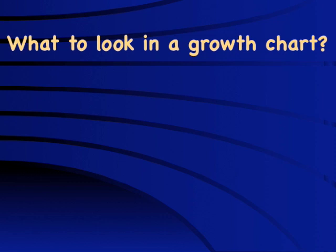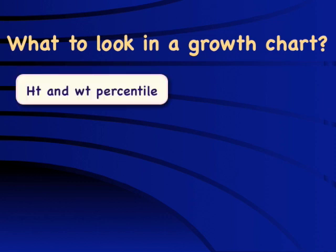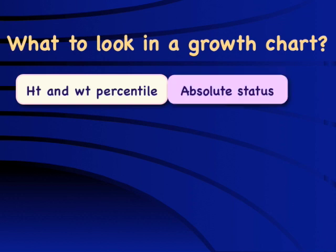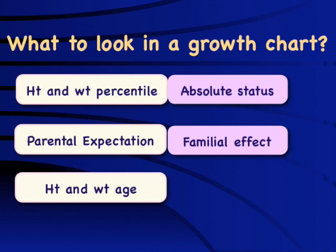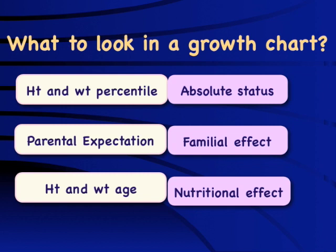There are three things that we have to look at. First of all is the height and weight percentile, which gives us information about the absolute status of that individual in comparison to a given population. Second is about parental expectation, which really places that particular individual with regards to the family. And finally, and most importantly, is the height and weight age, which really gives us the effect of nutritional causes.